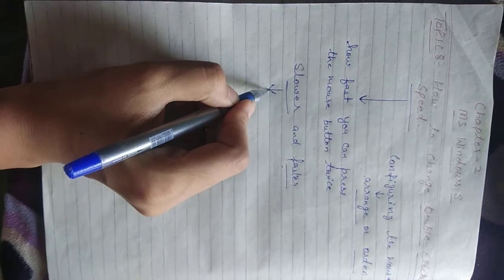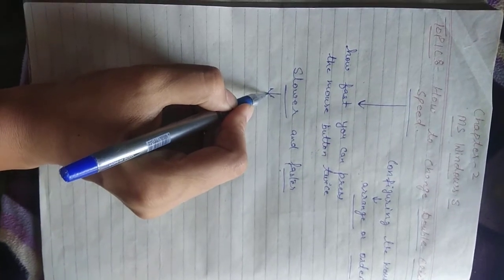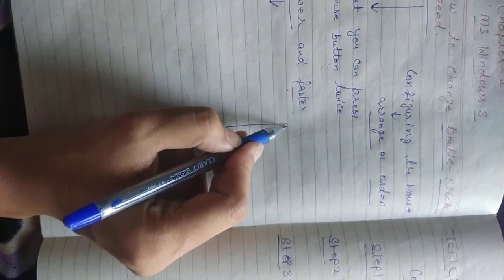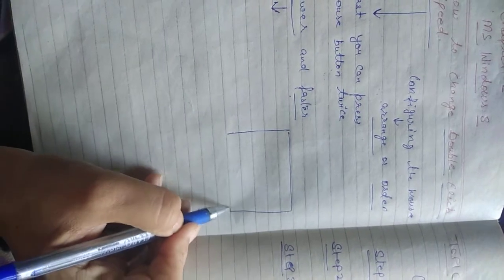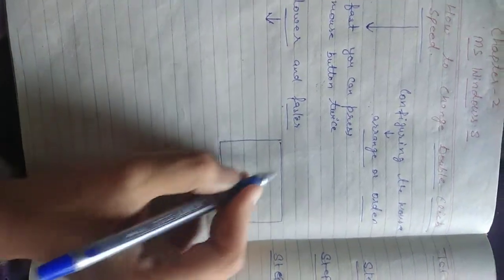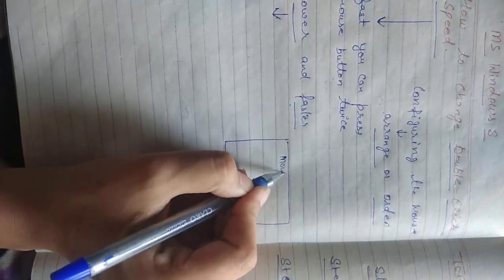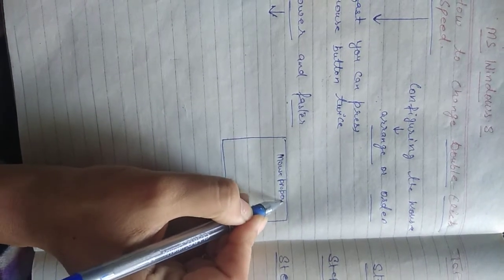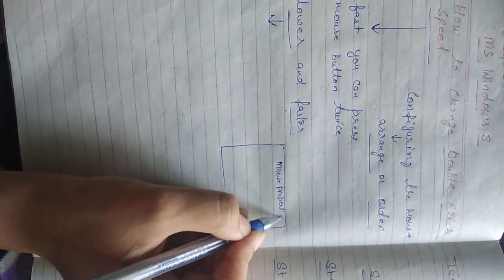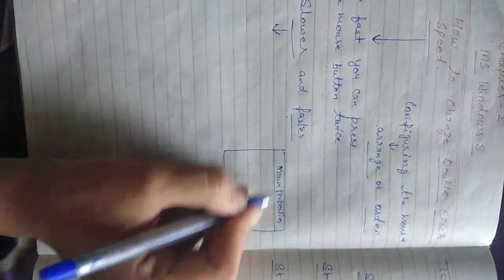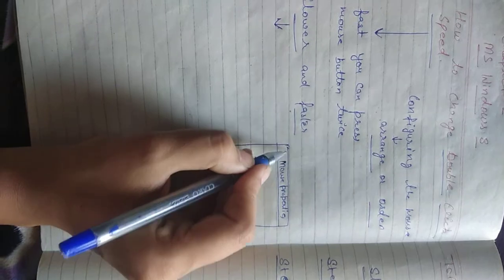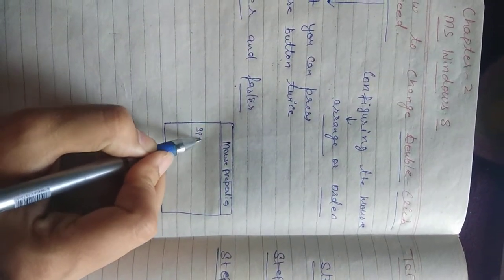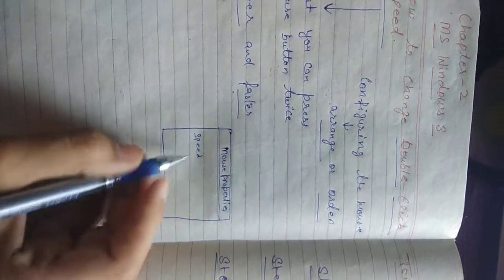In the previous topic we also discussed about the mouse properties and how to open mouse properties. In this box there is an option that is speed.